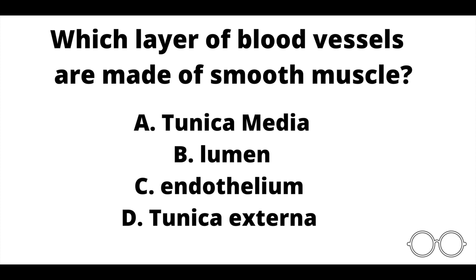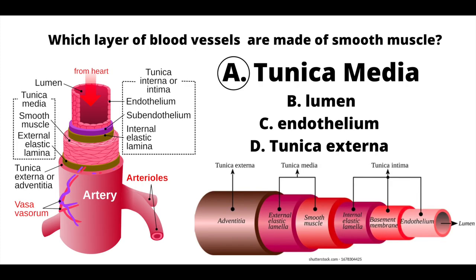Question number six, which layers of blood vessels are made of smooth muscle? A: tunica media. B: lumen. C: endothelium. Or D: tunica externa? Our answer here is A, tunica media.